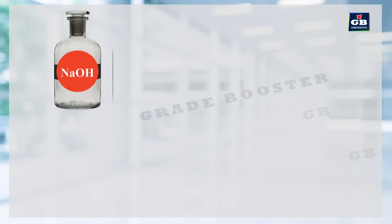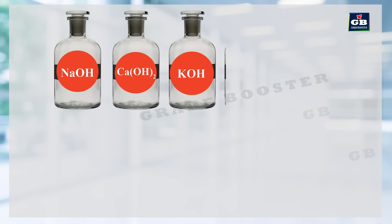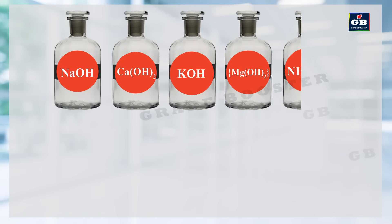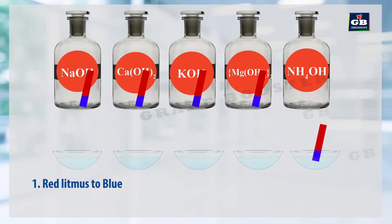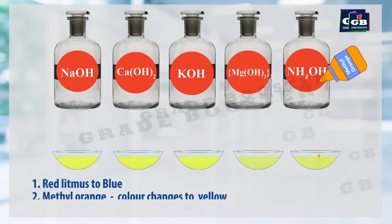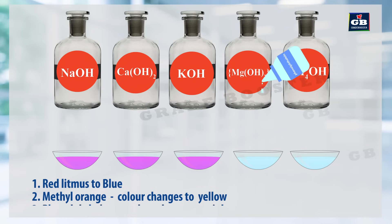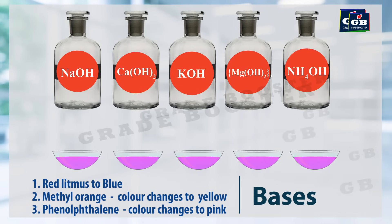The remaining compounds like sodium hydroxide, calcium hydroxide, potassium hydroxide, magnesium hydroxide and ammonium hydroxide turn the red litmus to blue and produce a yellow color with methyl orange. They form pink color when phenolphthalein is added. This proves that they are all bases.